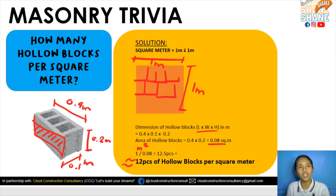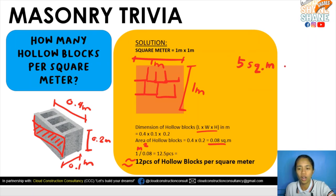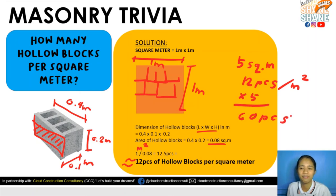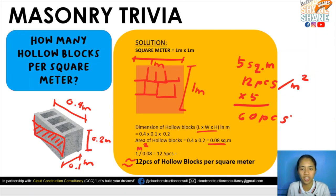So if we have 5 square meters for masonry works, we already have 12 pieces per square meter, so we just multiply by 5 to get 60 pieces. That's how quick it is — at least in terms of number of hollow blocks using this dimension, we can determine it right away.